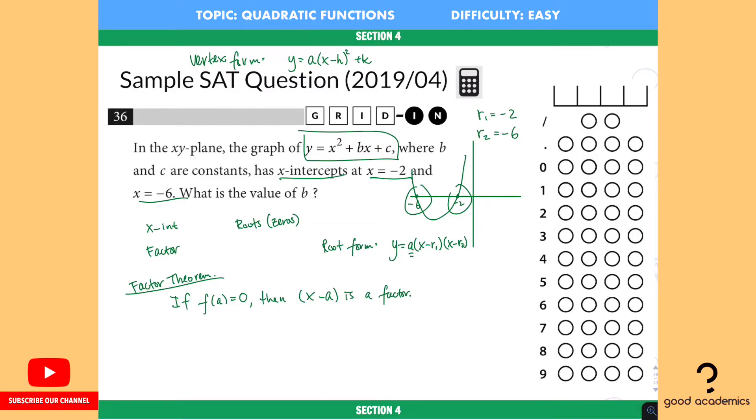Well, the value of a is going to be the leading coefficient in front of the x square. And since if you look at the x square right here, the leading coefficient is just 1. So a is simply 1. So anything times 1, it's just itself. So we can simplify this into just x minus r1, x minus r2.